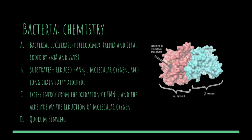The biochemical process of bacterial luminescence involves a heterodimer bacterial luciferase with two different polypeptides, referred to as alpha and beta, or lux A and lux B. The active site of the enzyme is within the alpha subunit, and the substrates consist of the luciferin flavin mononucleotide (FMNH2), molecular oxygen, and long-chain fatty aldehyde. Excess energy from the oxidation of flavin mononucleotide and the aldehyde, which occurs along with a reduction of oxygen, results in the emission of blue-green light at approximately 490 nanometers.